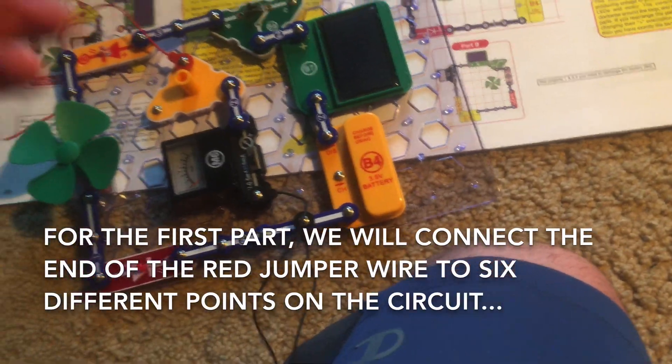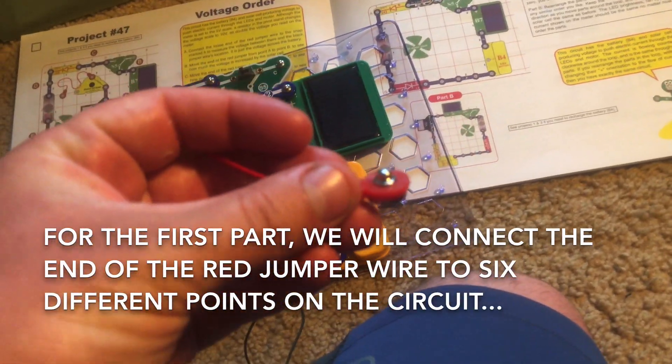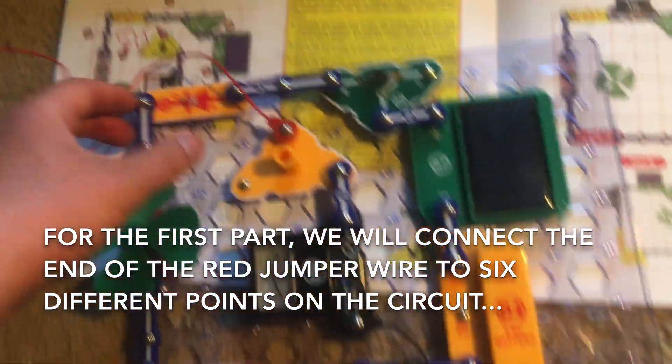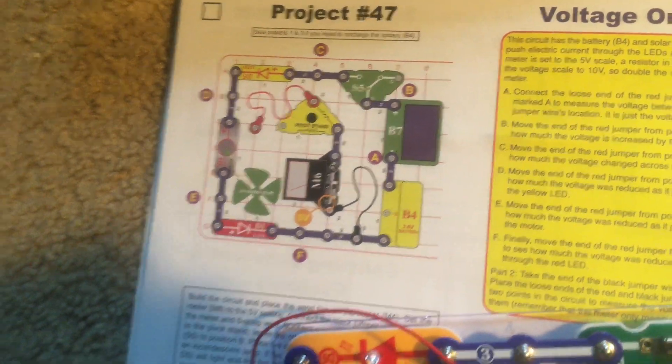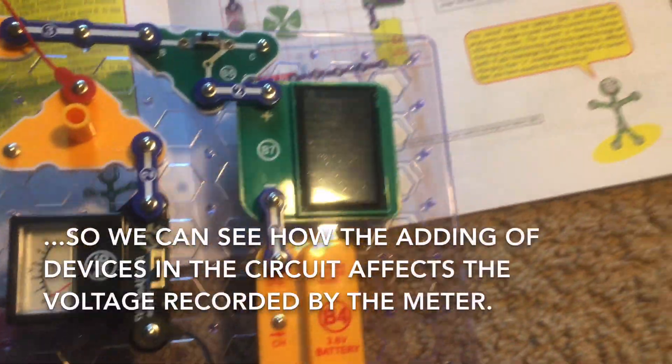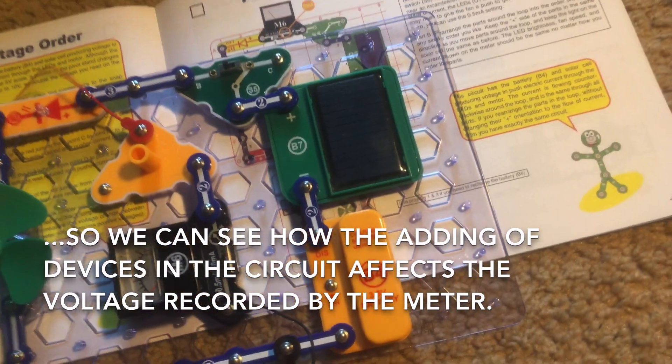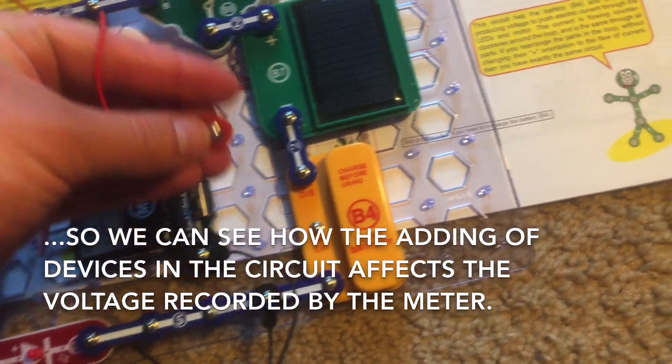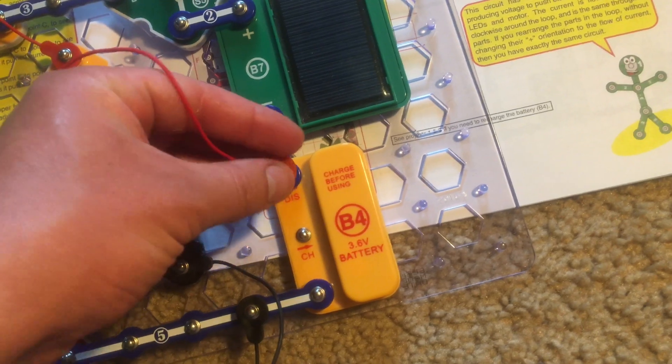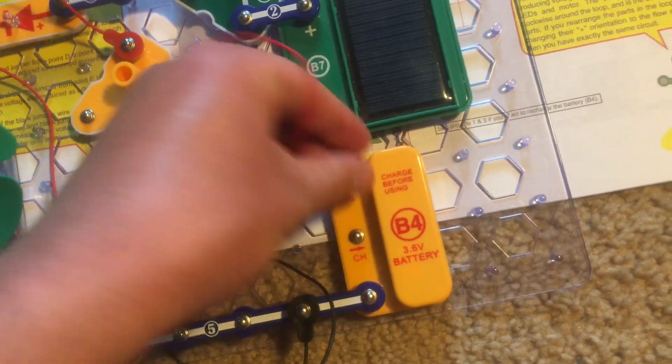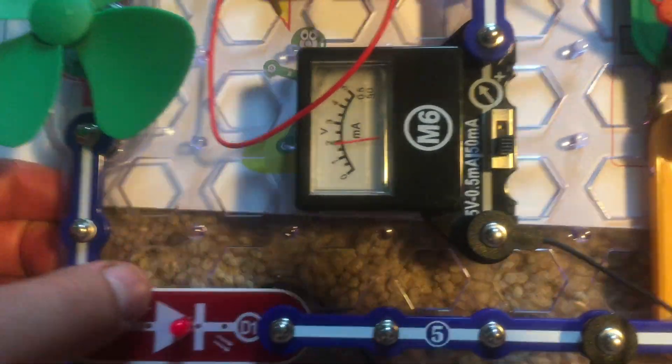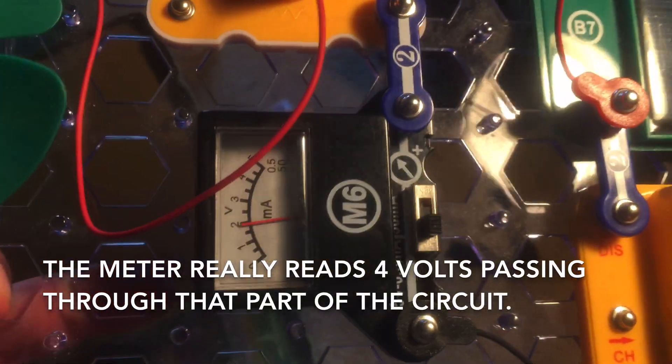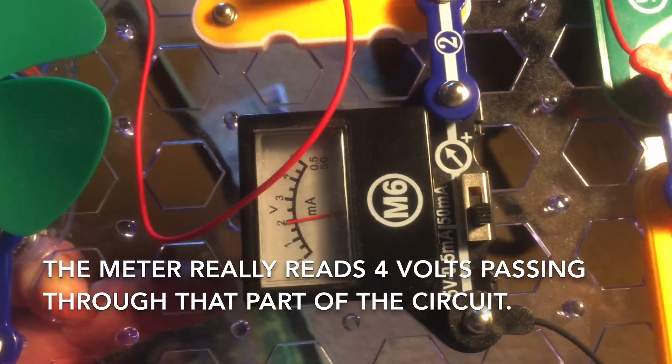Now for the first part of the circuit, we will connect the loose end of the red jumper wire to various labeled points on the circuit, point A through F. I am going to first connect the one end of the red jumper wire to the battery, point A, here. And so, the meter reads 2 volts. So, it would really be 4 volts passing through this part of the circuit.